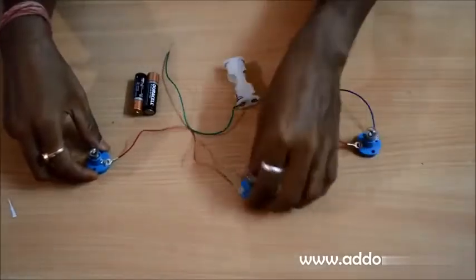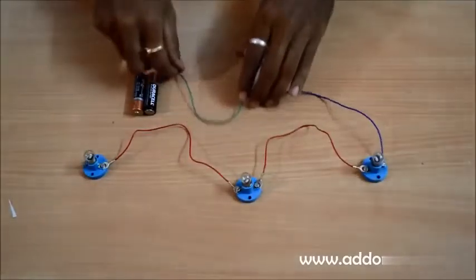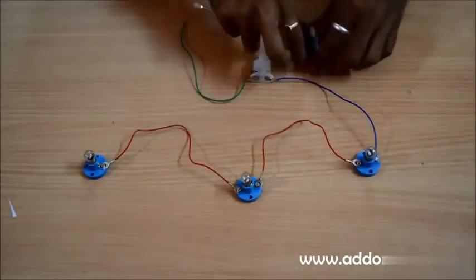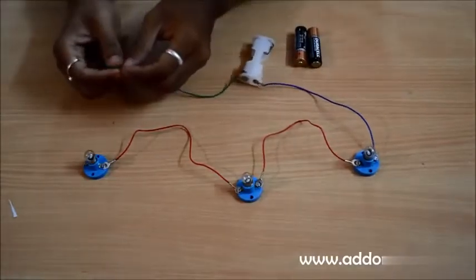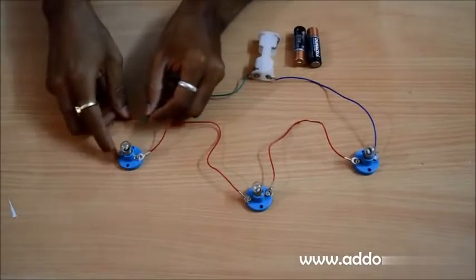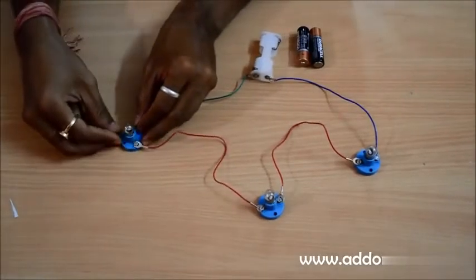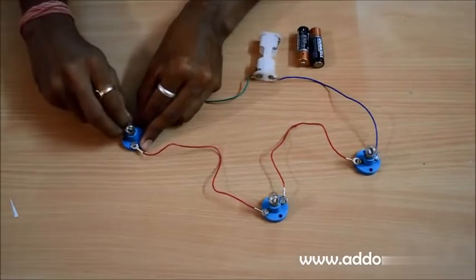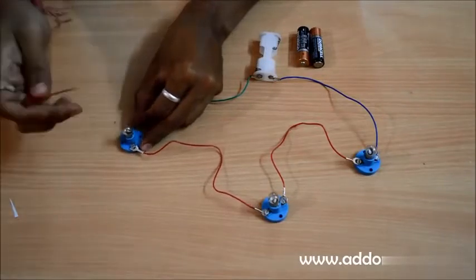So you can see that this is all in a straight line. In order for us to complete the loop, we have to connect the negative end of the battery holder to the last remaining screw of the third bulb holder. So I am going to quickly fix it here.